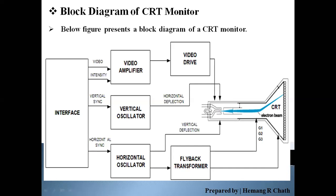Color CRT monitors use three electronic guns that produce different colors — generally red, green, and blue — to produce a full color image.